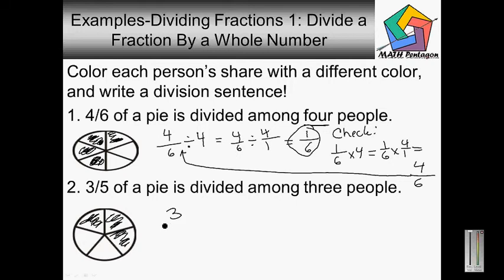We do 3 over 5 divided by 3 people. So we do 3 over 5 divided by 3 over 1.